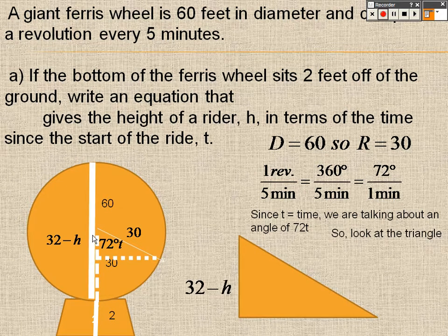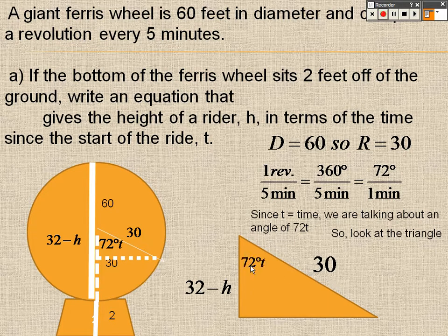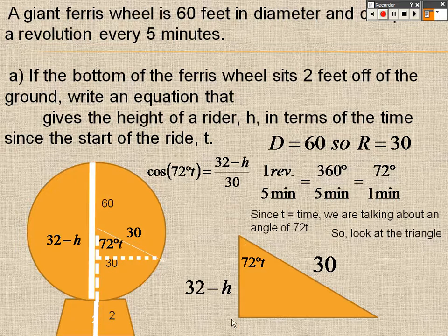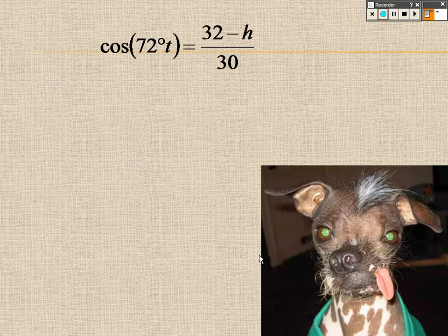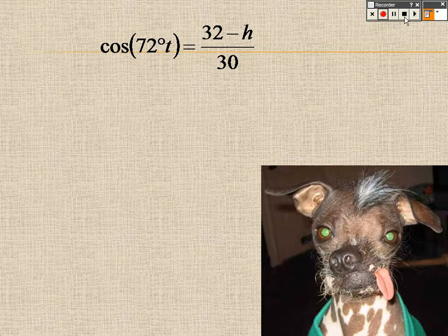So the triangle is 32 minus h, because I don't know what that is, but I know the whole thing is 32, and I know that that little part is what I want, so it's 32 minus h. I know that that's 30, and I know that that's 72 degrees times t. So to solve this, I do cosine, and the reason why I do cosine is because I have the adjacent over hypotenuse, so it's cosine of 72t equals 32 minus h over 30. And I will finish this when I come back. I want to make sure I have enough time to go over it correctly, so I'll finish this problem when I come back.